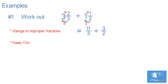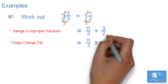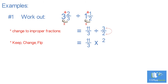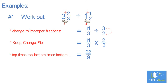Keep, Change, Flip. We keep the first fraction as it is, change the divide into a times, and flip the following fraction to become 2 thirds. Multiply top times top, bottom times bottom: 11 times 2 equals 22, over 3 times 3, which is 9.